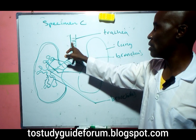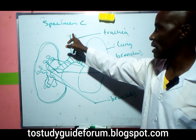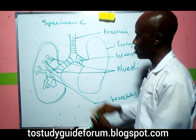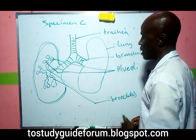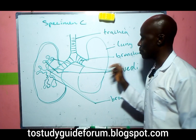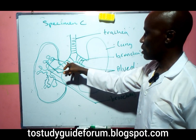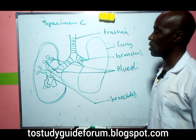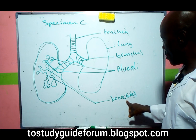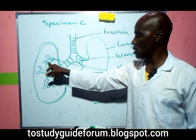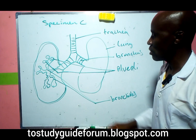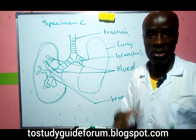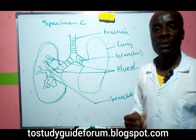The trachea is the windpipe where air passes through. It branches into the bronchi, which lead into the lungs. Inside the lung, we have the bronchioles — the smaller branches — and at the end of these branches are the alveoli.